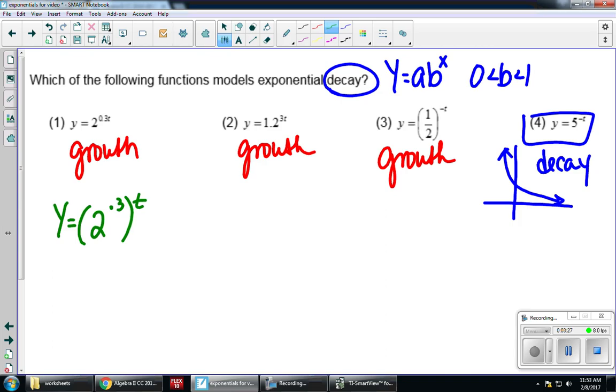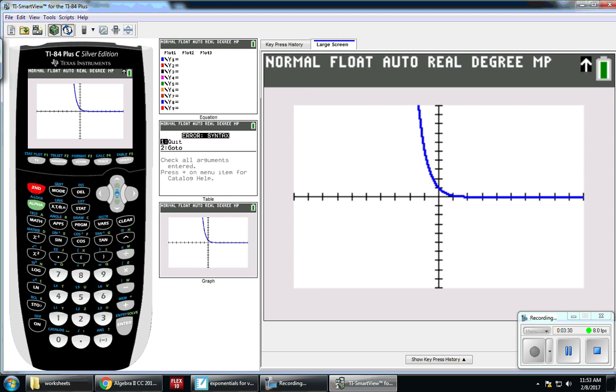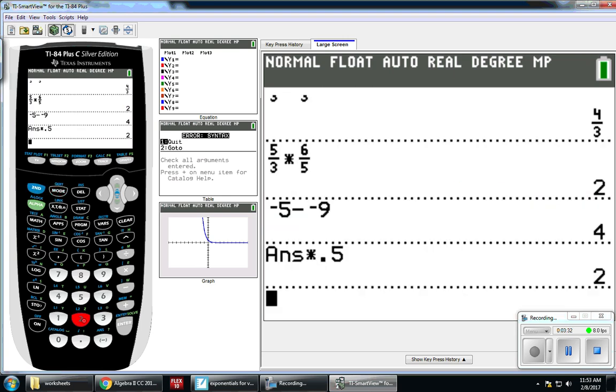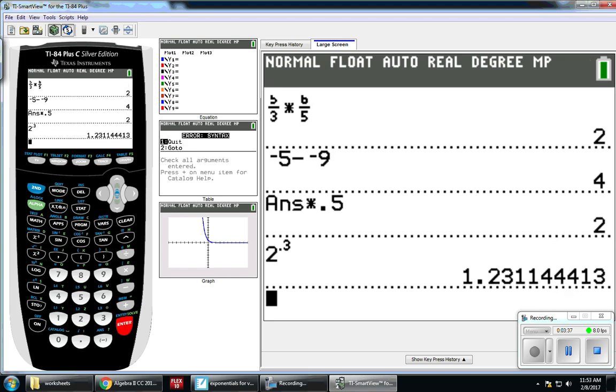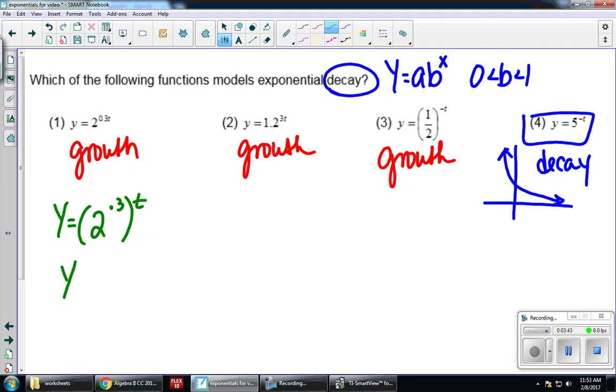This is going to be 2 to the 0.3 to the t power. I'm separating those exponents that way I'm isolating the t with no coefficients. Back to my calculator, to my home screen, 2 to the 0.3 power. I'm going to round to the nearest hundredth, so I get 1.23 to the t. Now you can see that this is definitely growth because my base or my growth factor is 1.23.